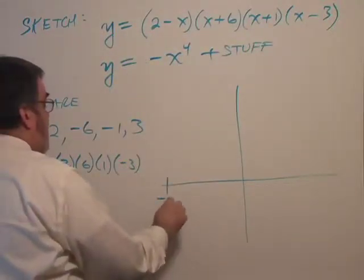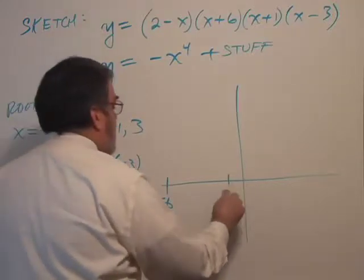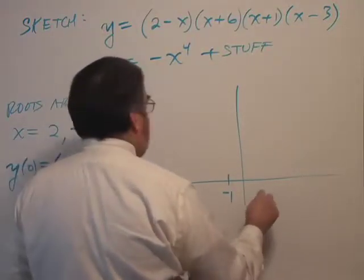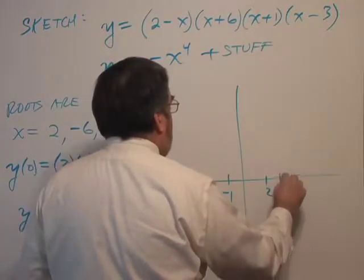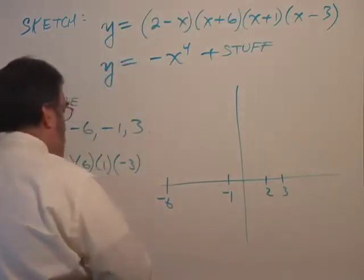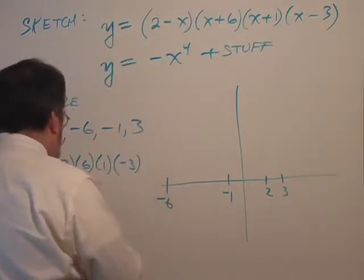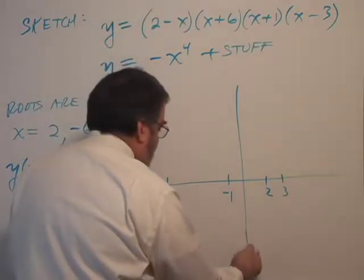All right. So the roots are at negative 6, negative 1, 2 and 3. And the intercept is at negative 36.